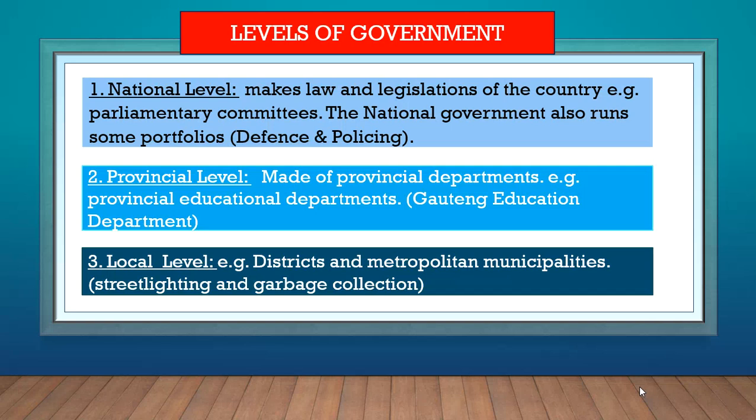The second level is provincial government. These are different provincial departments. Here we use education as an example. Each province in South Africa will have its own education department. Gauteng, for example, has the Gauteng Education Department, and the Gauteng Education Department will basically be in charge of education in Gauteng.